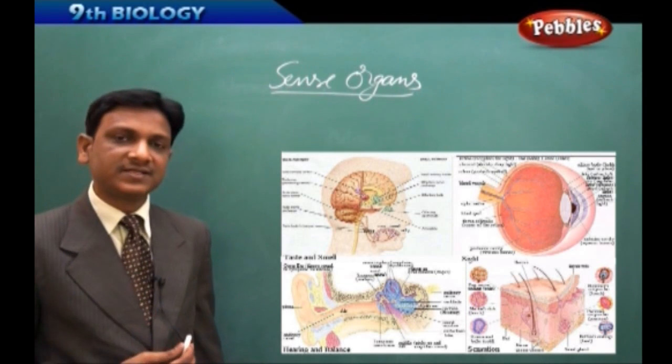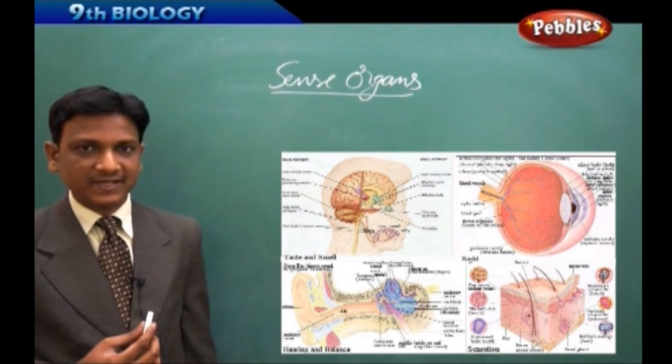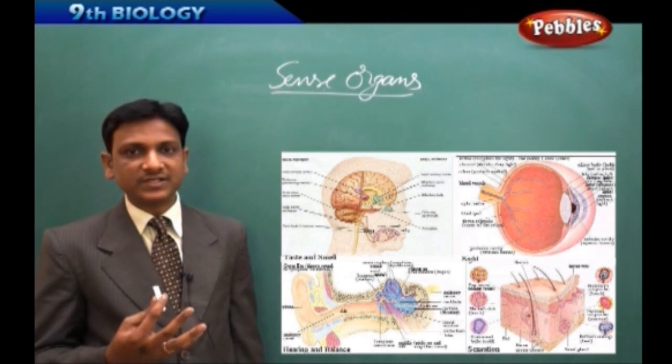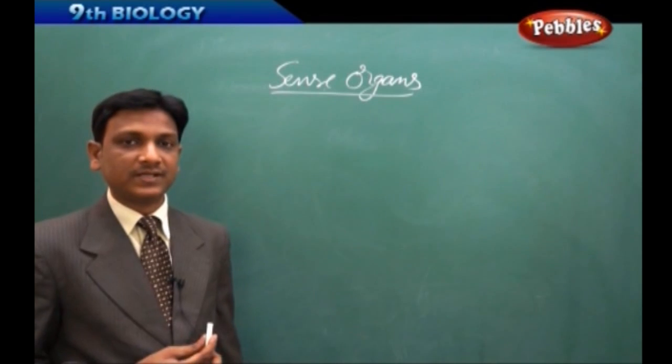Certain plants are sensitive to touch. We know the mimosa plant, the touch-me-not plant. If you touch the plant, what happens? It droops, it closes its leaves. So that is the response shown by the plant.